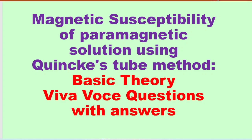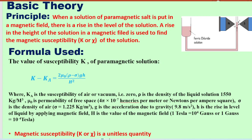In this video, I will discuss the viva voce questions based on magnetic susceptibility of paramagnetic solution using Quincke's tube method. It is an important experiment in B.Tech and B.Sc courses. The principle of this experiment is based on the rise of the level of the solution in the magnetic field, where we have used the ferric chloride solution.